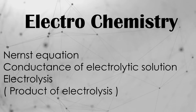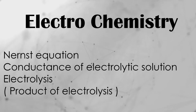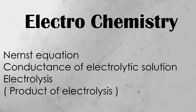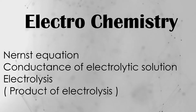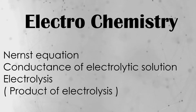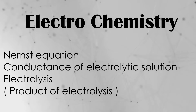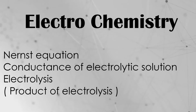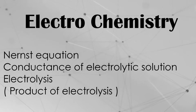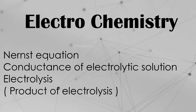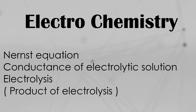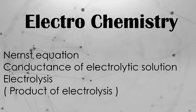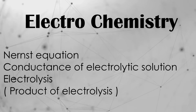Our first chapter is Electrochemistry. The most important topics in Electrochemistry are the Nernst equation, conductance of electrolytic solution, electrolysis, and products of electrolysis. From the Nernst equation alone, 30 questions have come in the last 10 years, and from these topics combined, 18 questions have appeared. You can judge for yourselves how important this topic is.